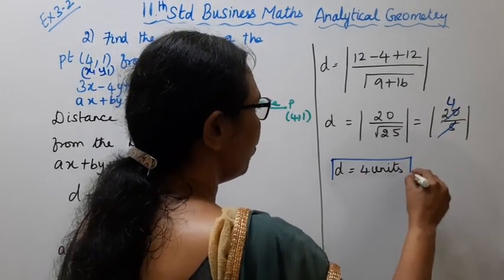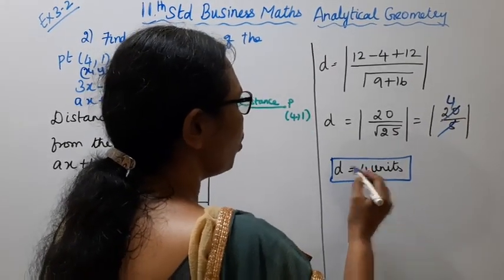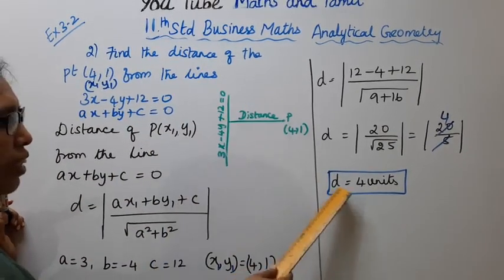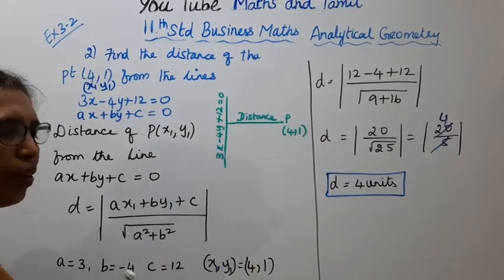D is equal to 4 units. Find the distance, distance equal to 4 units.